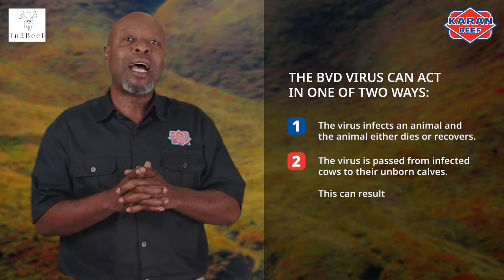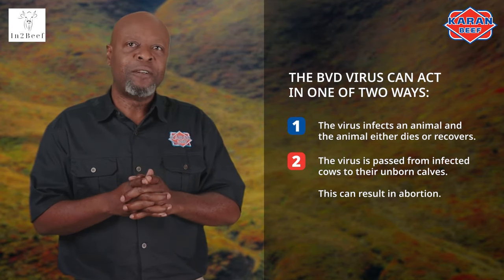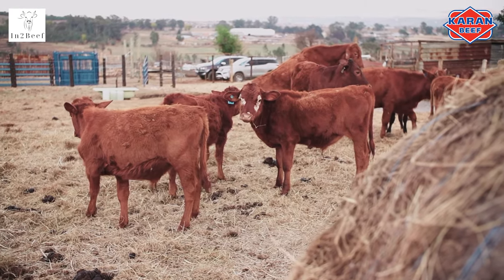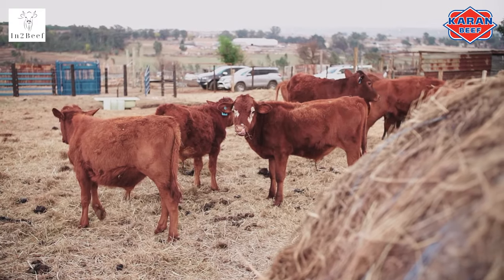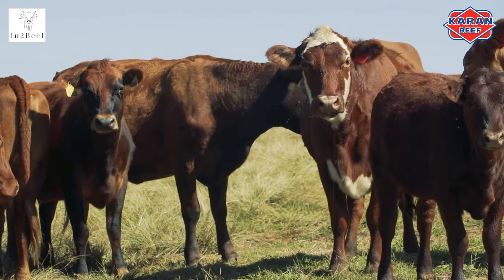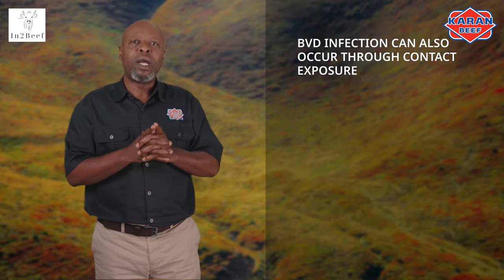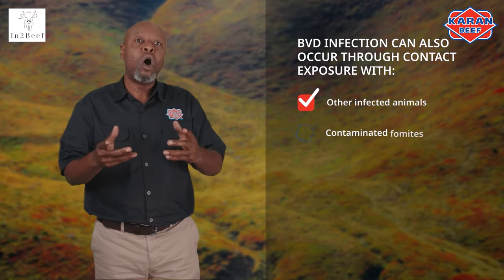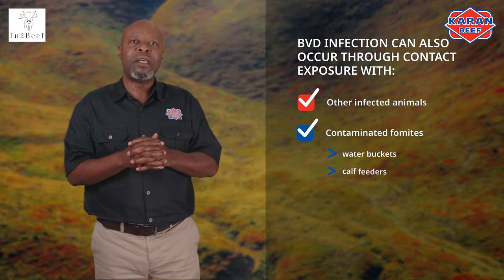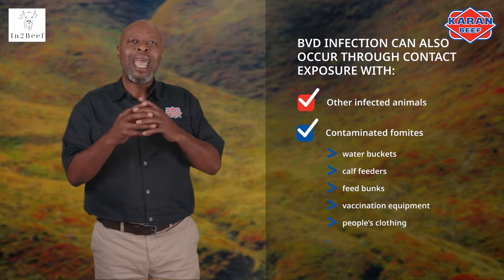Or, the virus is passed from infected cows to their unborn calves. This can result in abortion. Calves infected early in pregnancy can remain infected all their lives and are considered persistently infected. These animals will continue to shed the virus to other animals in the herd. If you are bringing pregnant heifers into the herd, keep them separate from the main herd until they calf and then sample the resulting calves. If the calves are negative, their mothers will be too. If the calf is positive, test the mother to determine her status. If both are positive, then each will have to be removed. BVD infection can also occur through contact with contaminated fomites like water buckets, calf feeders, feed bunks, vaccination equipment, people's clothing, and cattle trucks.